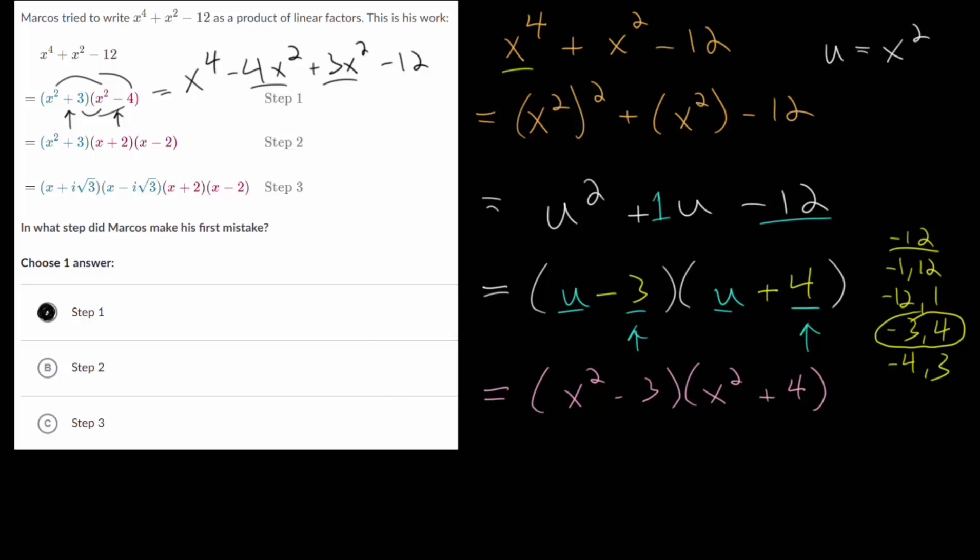But let's actually continue this so that we can factor this as a product of linear factors, where essentially we have x to the first power in each of these. The key idea is to recognize that we have a difference of squares here and a sum of squares here.